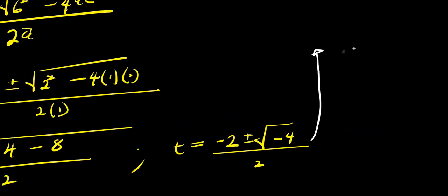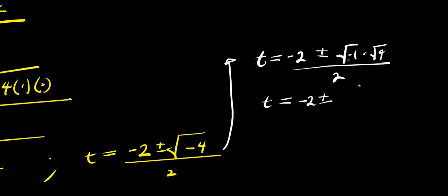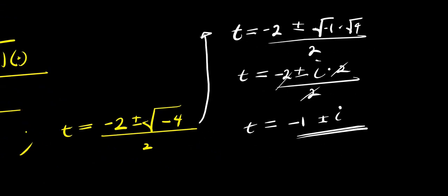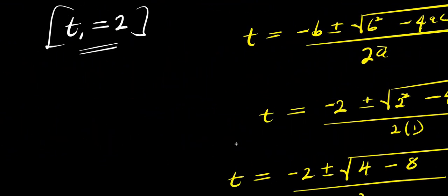From here, we have square root of negative 4 equals square root of negative 1 times square root of 4, divided by 2. So t equals negative 2, plus or minus i times 2, divided by 2. We divide everything by 2, giving t equals negative 1 plus or minus i. So we have two values for t: t₂ equals negative 1 plus i, and t₃ equals negative 1 minus i. These are two complex solutions, and the one real solution is t equals 2.